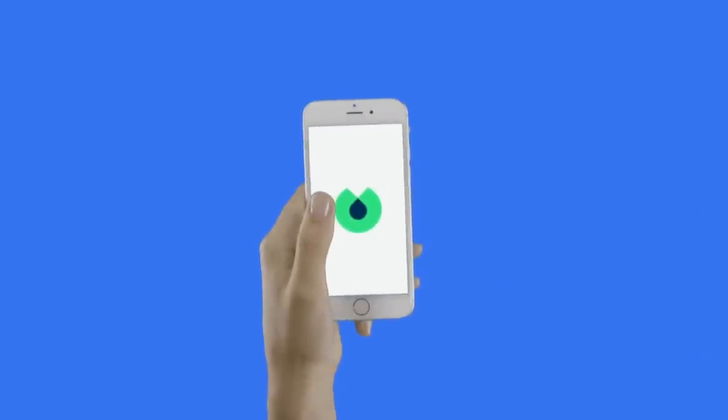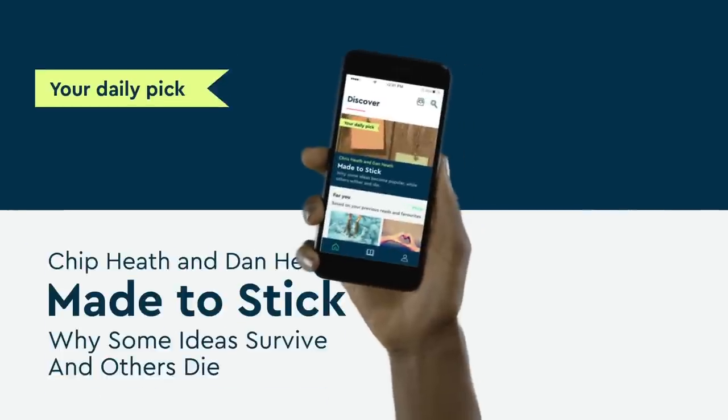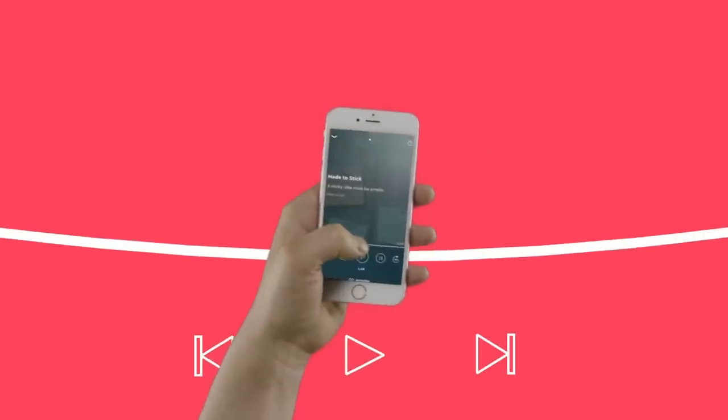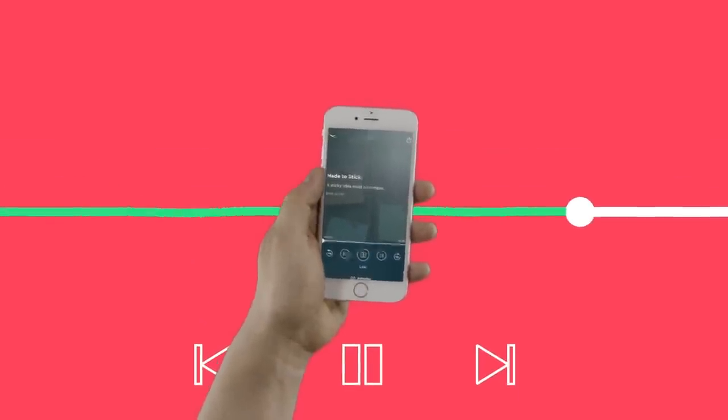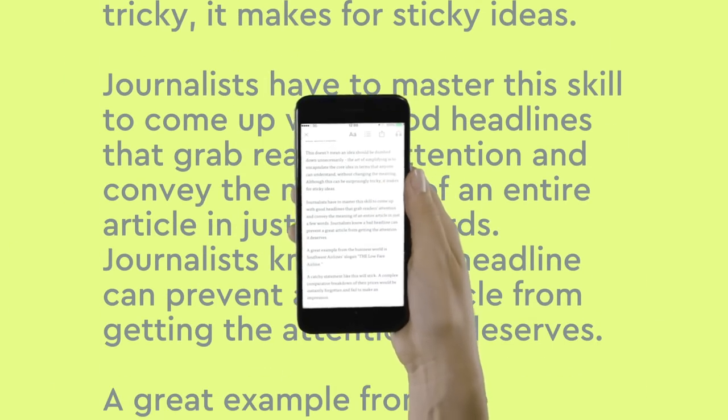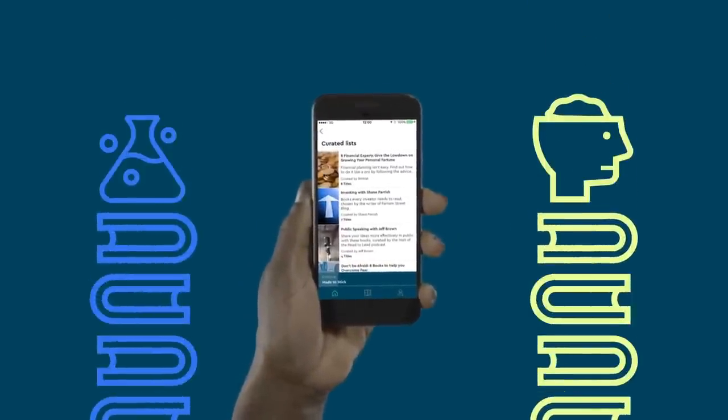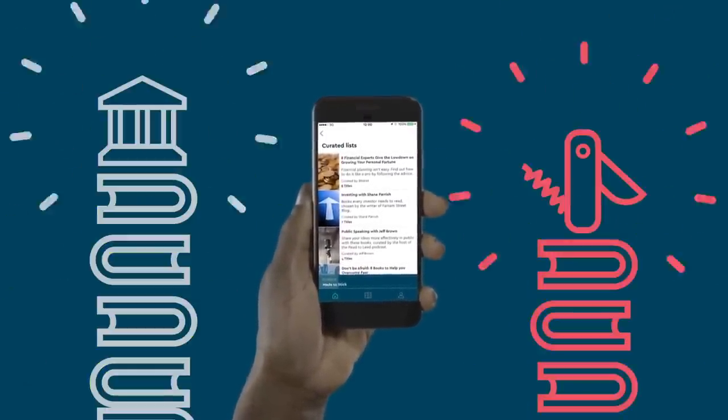Blinkist offers the best insights and key ideas from over 3,000 non-fiction titles, letting you learn new things faster while saving both time and money. I listen to Blinkist while taking walks or running errands. I can even learn from a whole book in the time it takes me to do the dishes. You can use Blinkist to discover new works, as well as recap books that you've read before.